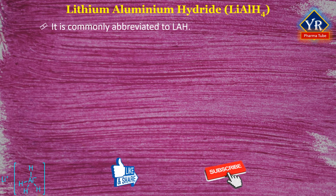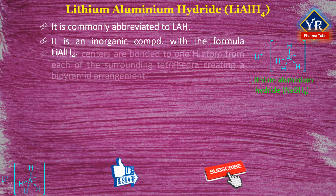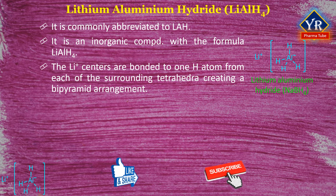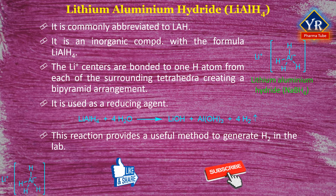Lithium aluminium hydride is commonly abbreviated to LAH. It is an inorganic compound with the chemical formula LiAlH4. The lithium ion centers are bonded to one hydrogen atom from each of the surrounding tetrahedra, creating a bipyramid arrangement. It is a gray-colored solid used as a reducing agent in organic synthesis. The solid is dangerously reactive toward water, releasing gaseous hydrogen, which provides a useful method to generate hydrogen in the laboratory.